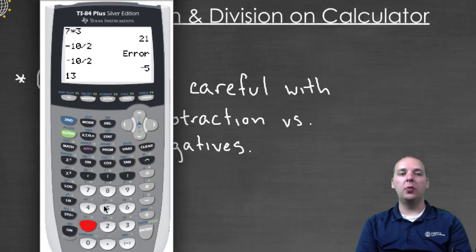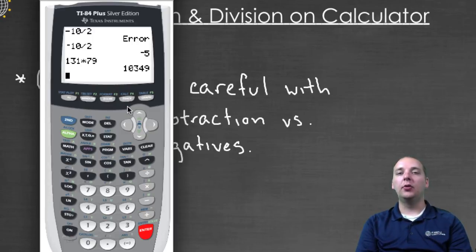However, if you had a hundred and thirty-one times seventy-nine, type it in, push enter, and we quickly see it's ten thousand three hundred forty-nine. So calculators can be a great help.